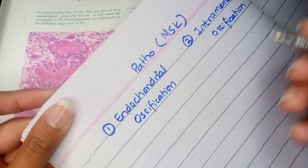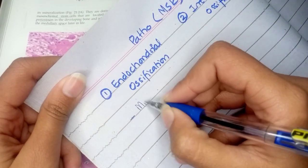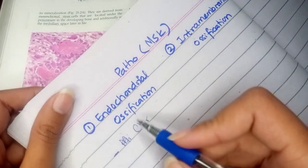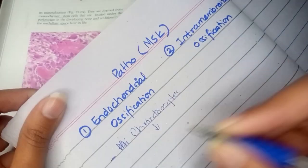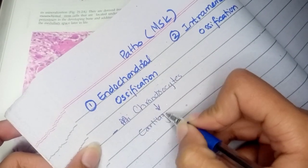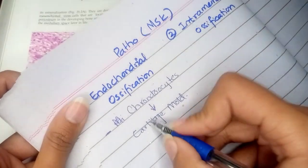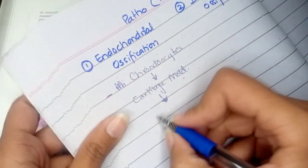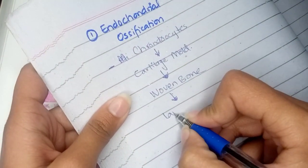In endochondral ossification, first of all you would see a cartilage mold that would be produced by the chondrocytes. Then we have osteoblastic and osteoclastic activity. These osteoblasts and osteoclasts would form the bone — they would lay down the woven bone, and later on this woven bone would be replaced by the lamellar bone.